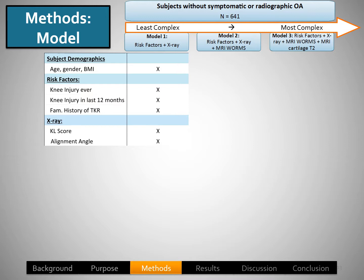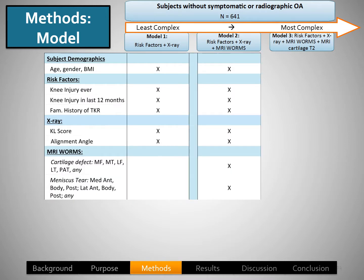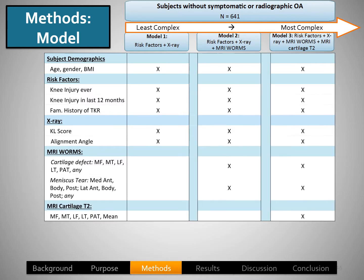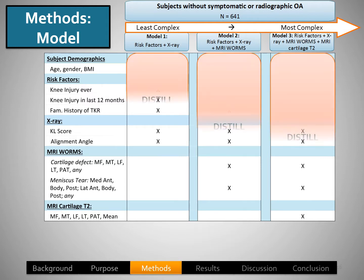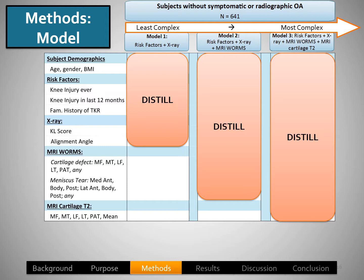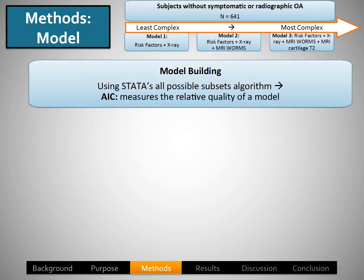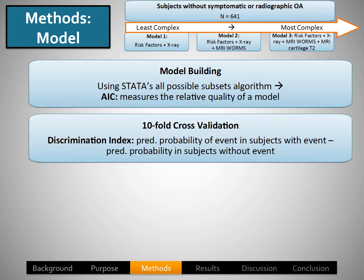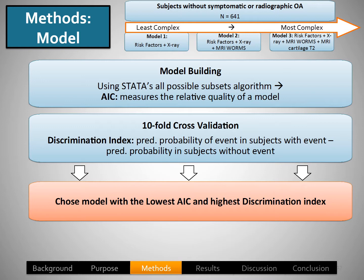The details for the variables included are listed here. For the x-ray variables, we included KL score and alignment angle. For the model with MRI WORM scores, we included WORM scores, cartilage defects, and meniscus WORMs. And for the T2 model, we included T2 values in each of the five compartments as well as the mean. We distilled each of these three models using Stata's model building algorithm called All Possible Subsets Algorithm and measured the AIC. We then performed tenfold cross-validation to determine a discrimination index, and chose the model with the lowest AIC and the highest discrimination index.